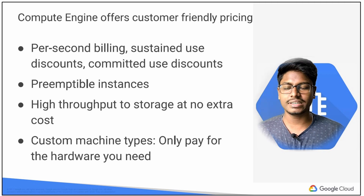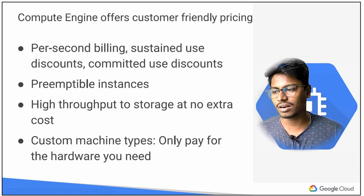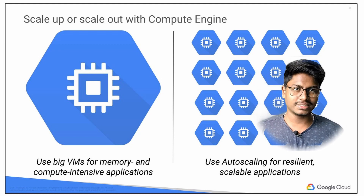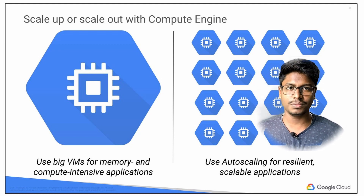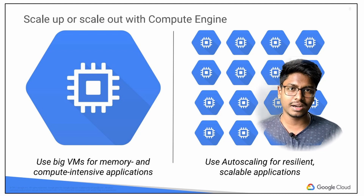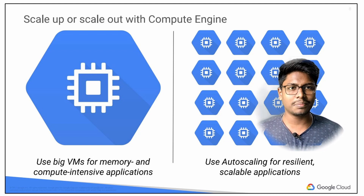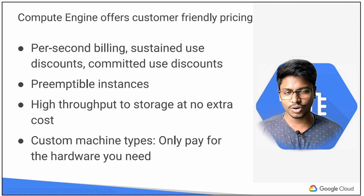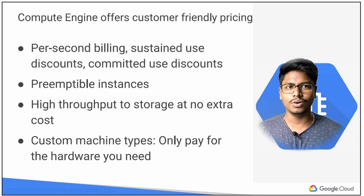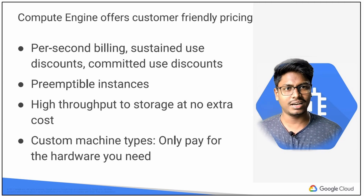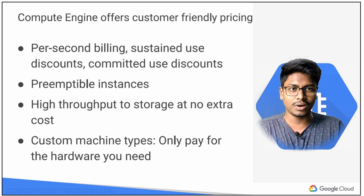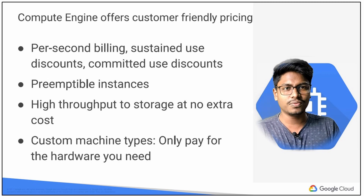With Custom Machine Types, you can modify the machine types — scale up or scale out. For example, if you have a VM in your application, you can build it with 32 GB RAM and 16 cores. We also have Preemptible Instances. If you have a lot of workloads that don't need to run continuously, you can use Preemptible Instances as one of your VM options.